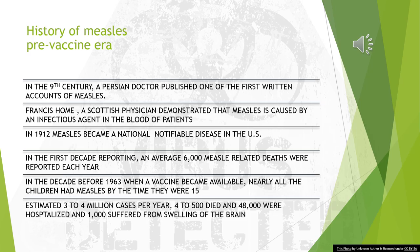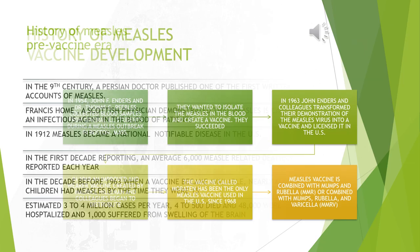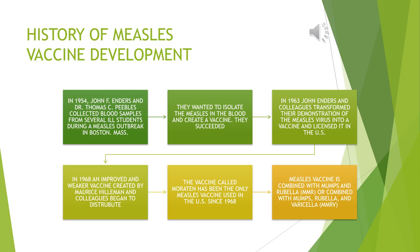In the first decade of reporting, an average of 6,000 measles-related deaths were reported each year. In the decade before 1963, when the vaccine became available, nearly all children had measles by the time they were 15. It was estimated there were three to four million cases per year; four to five hundred died, four thousand were hospitalized, and one thousand suffered from swelling of the brain.